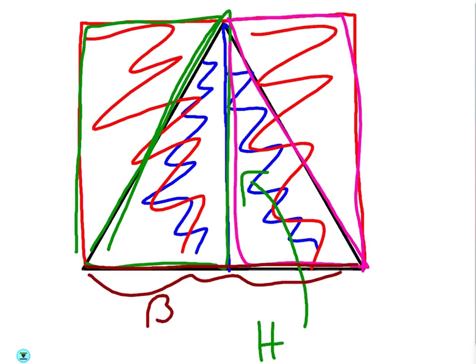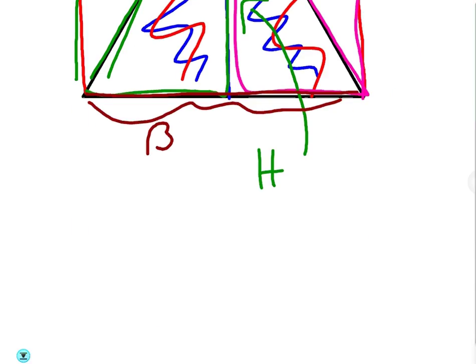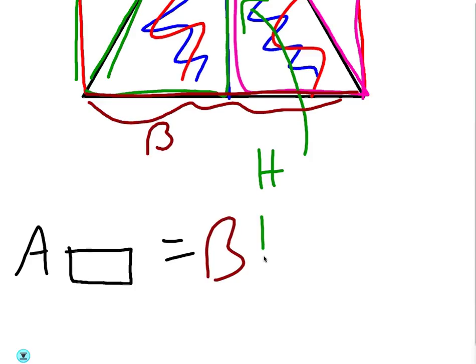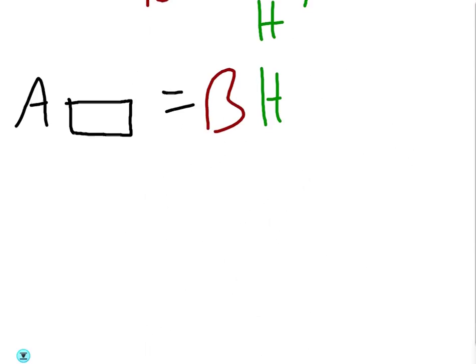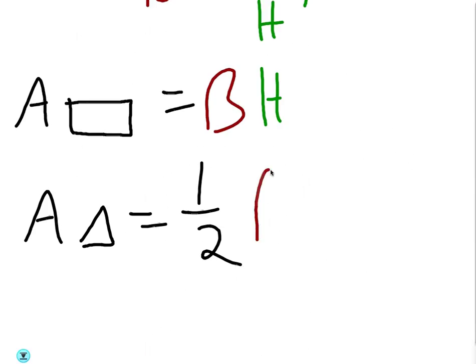The height of the triangle is also the height of the rectangle, so the area of the rectangle would just be base times height. But as we showed, the area of the triangle is just half of that — so the area of the triangle equals one-half base times height. That's where the formula comes from. You can do this for any triangle: make a rectangle out of it and see that its area is just half the area of that rectangle.